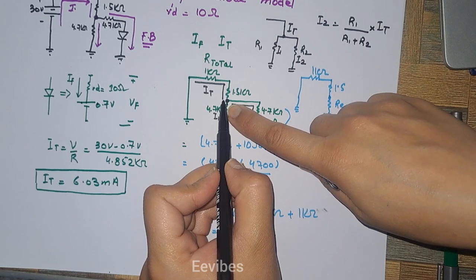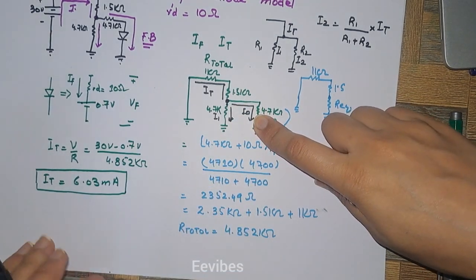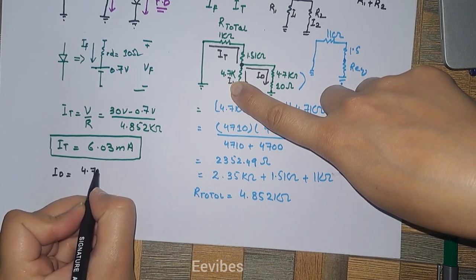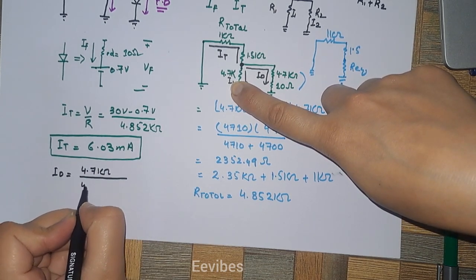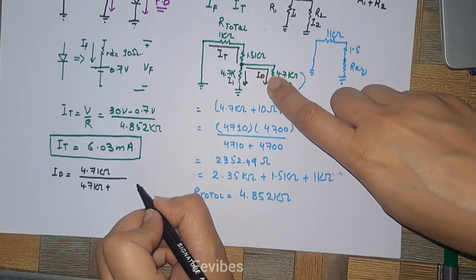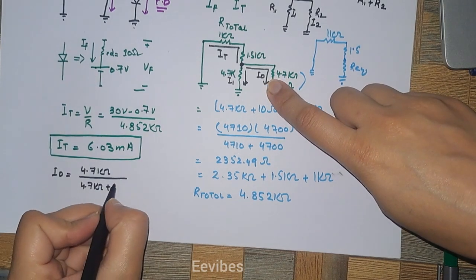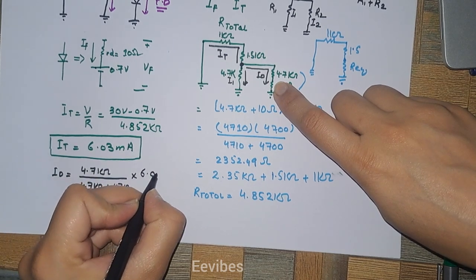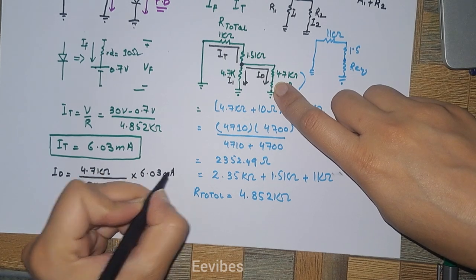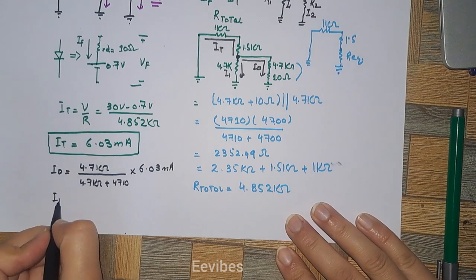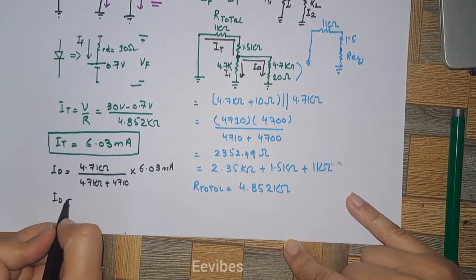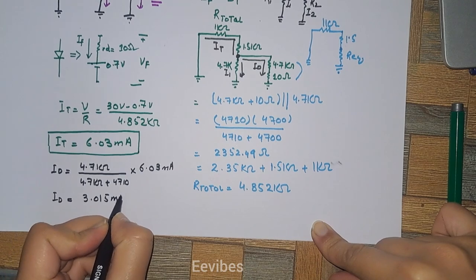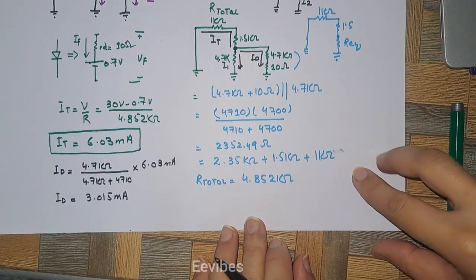Applying the current divider rule to find id: id equals (4.7 kΩ) / (4.7 kΩ + 4710 Ω) multiplied by the total current of 6.03 mA. The 4710 Ω accounts for the 4.7 kΩ plus the 10 Ω dynamic resistance added in series. Simplifying this gives id equal to 3.015 milliamperes. This is the diode current.